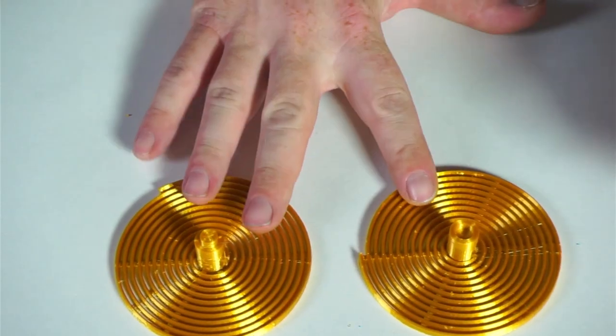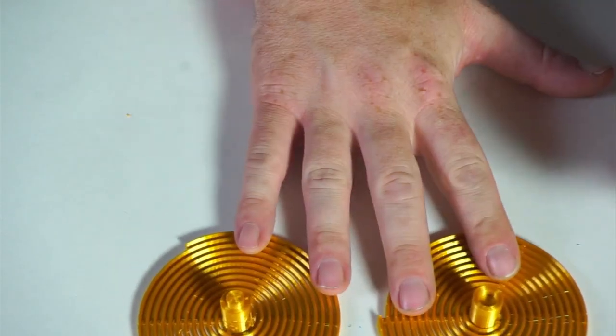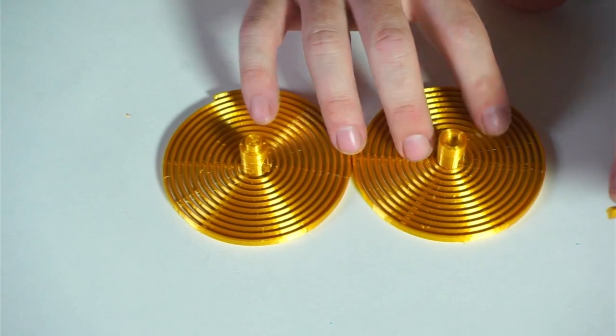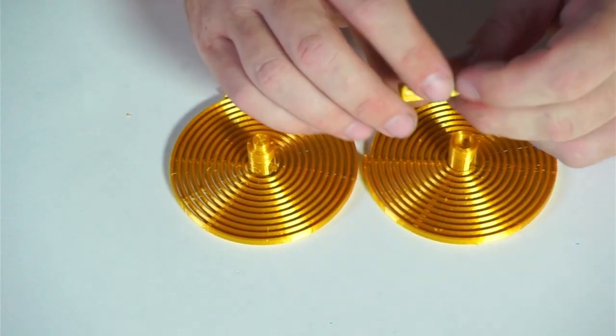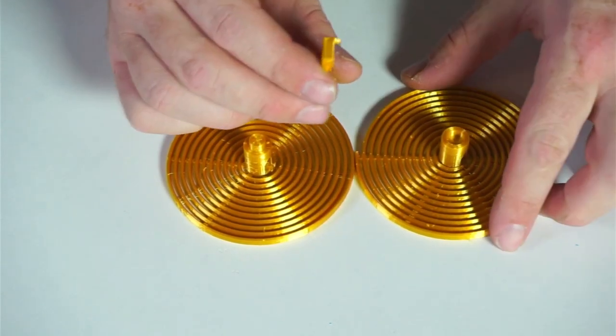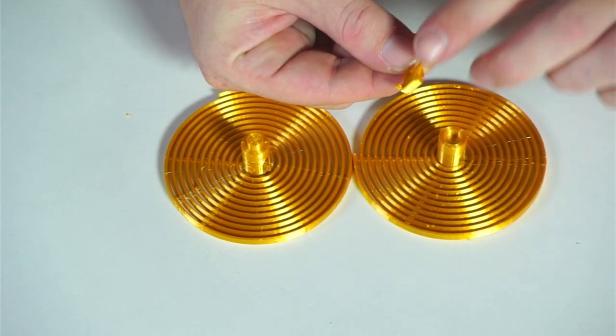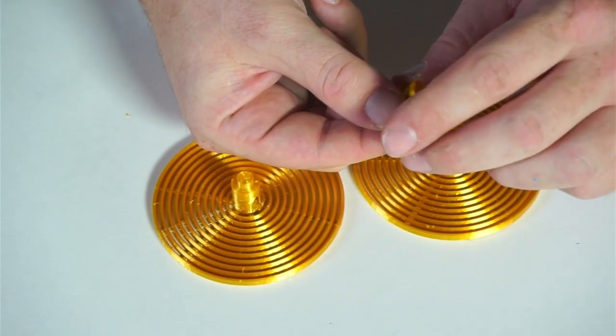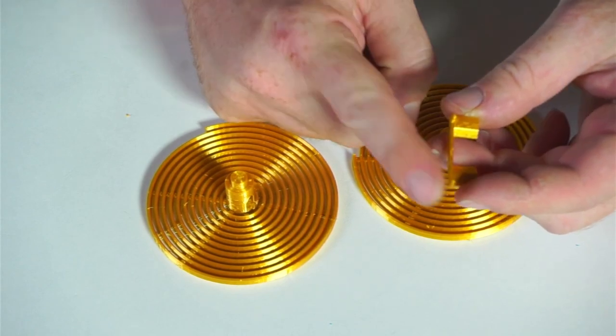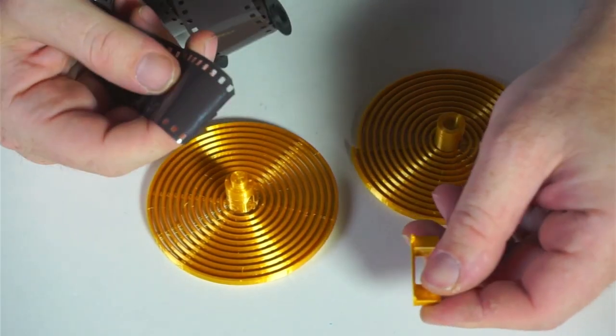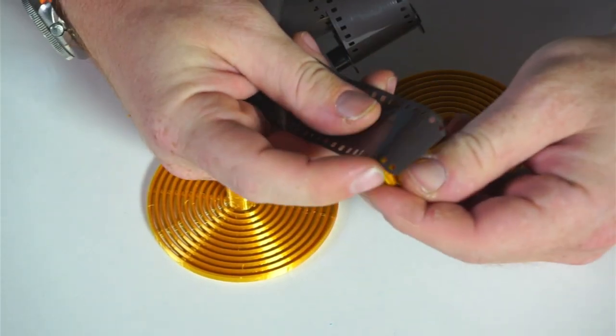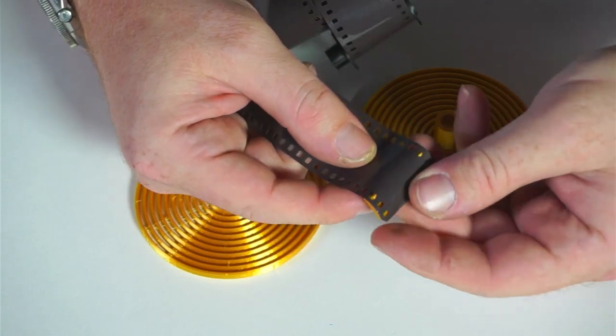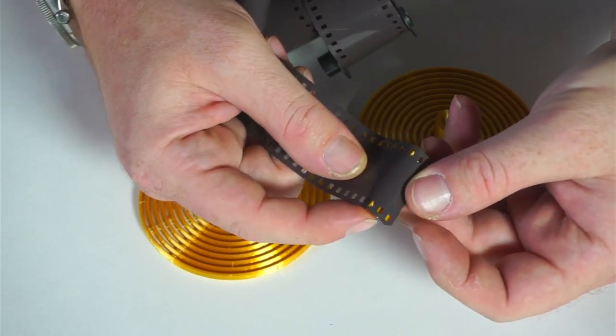So to assemble the 35mm reels, we have the top and the bottom half. Clean these off if there's any stringing in your printer. And then you have this clip. This clip has two triangular plugs on this side. And it has two teeth on this side.